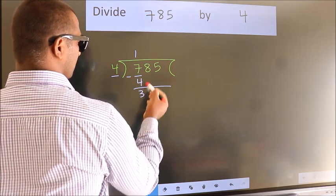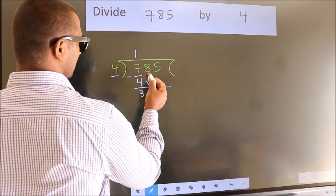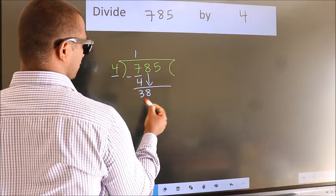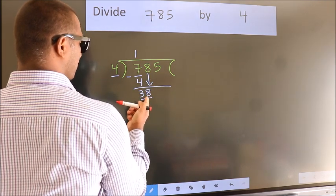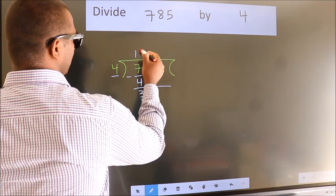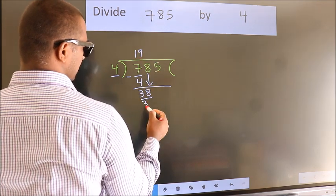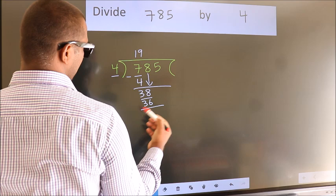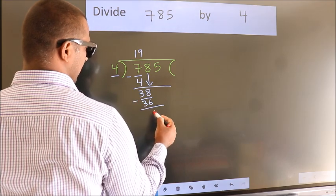After this, bring down the beside number. So, 8 down. So, 38. A number close to 38 in 4 table is 4 nines 36. Now, we subtract. We get 2.